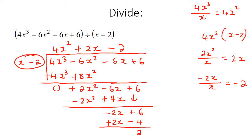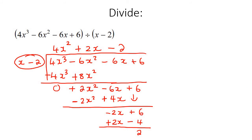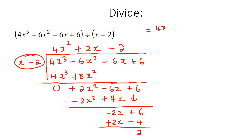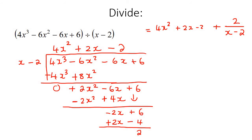So how do we write that as our final answer? You write: equals 4x squared plus 2x take away 2. Then you say plus 2 over — because 2 is the remainder — over this part here. So 2 over x take away 2.